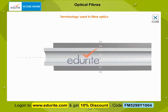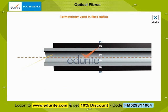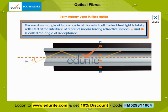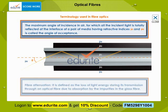Terminology used in fiber optics: here you can see a ray of light traveling from air of refractive index mu0 into an optic fiber. The maximum angle of incidence in air for which all the incident light is totally reflected at the interface of a pair of media having refractive indices mu1 and mu2 is called the angle of acceptance. Fiber attenuation is defined as the loss of light energy during its transmission through an optical fiber due to absorption by the impurities in the glass fiber.